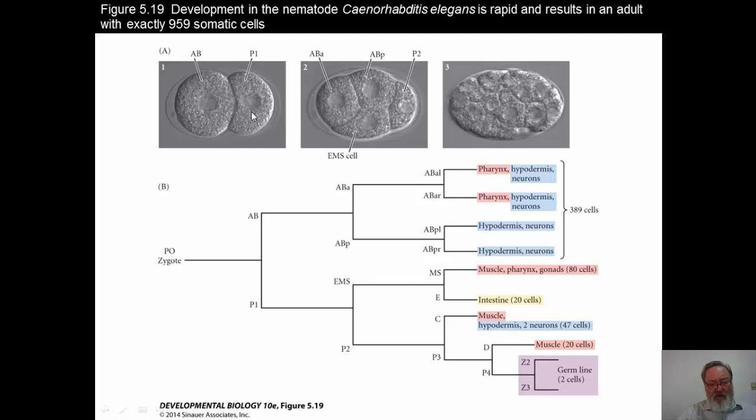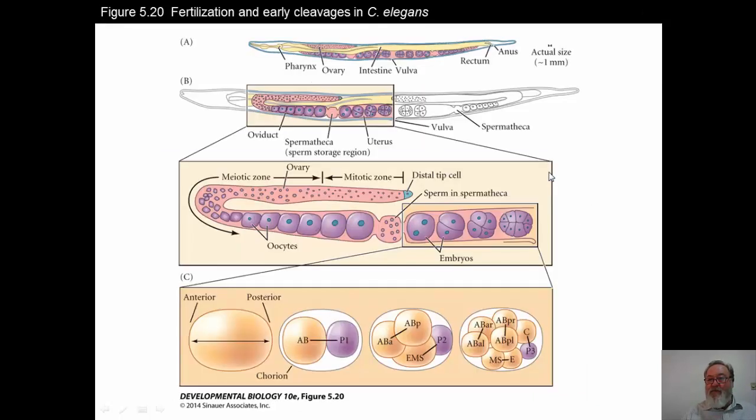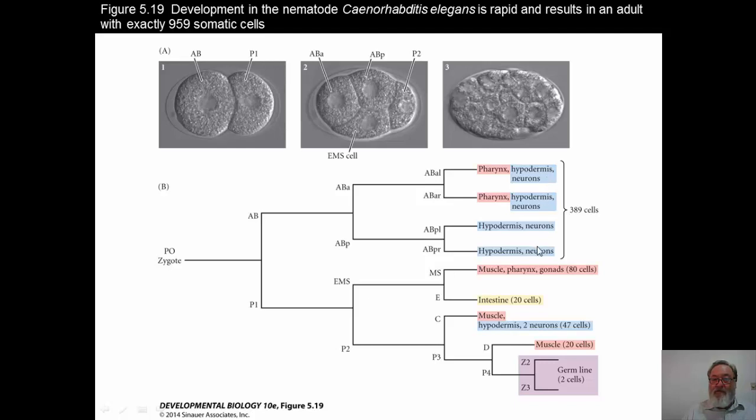But anyway, it has been a very useful organism to study. And I just wanted to mention also, as we look at it, that there are certain things as development goes on, there are 389 cells, for example, that will give rise to these structures here. And that's known after about the fourth division of the cells. And you can see there are 80 cells that form muscle, pharynx and gonads, 20 that form the intestine, 47 that form muscle and hypodermis, and so forth. And so it's a very well-defined animal model, and you can pick out individual cells and study exactly what those cells do and what genes are turned on to produce what proteins and so forth.